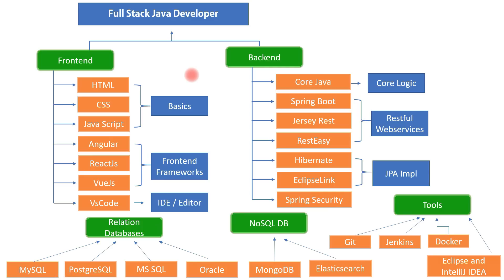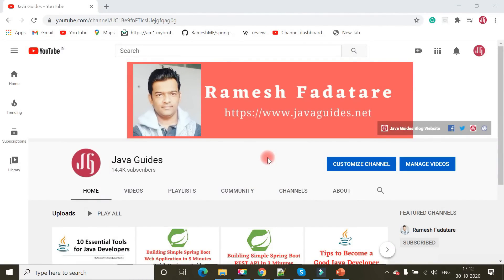I hope this video helped you get an idea of the tools and technologies needed to become a full stack Java developer. If you are already a Java developer wanting to become full stack, you can start by learning at least one modern front-end framework — either Angular, React.js, or Vue.js. All three are very popular modern frameworks; you need to learn at least one of them.